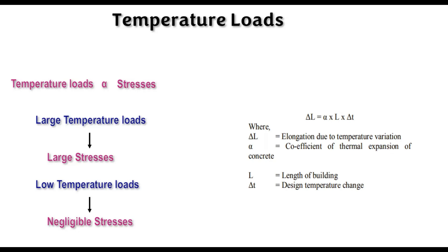The elongation due to temperature variation can be calculated using the formula: delta L equals alpha multiplied by L multiplied by delta T. Here, delta L is the elongation due to temperature variation, alpha is the coefficient of thermal expansion, L is the length of the building or structure, and delta T is the temperature change. This is the basic concept behind temperature load.